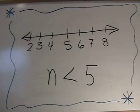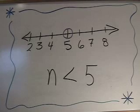Since this inequality says that n is less than 5, that means n cannot be 5. It can be really, really close to 5, but it can't be exactly 5. So, we draw an open circle at 5. This says that we're not shading in the 5, because n cannot be 5.